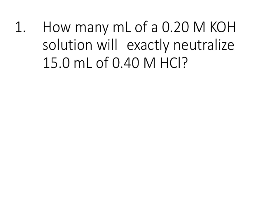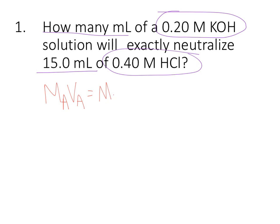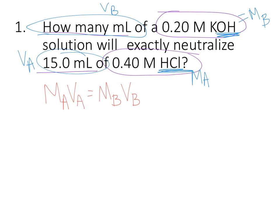Alright, all ready to get started. So number one on the worksheet says how many milliliters of a 0.20 M KOH solution will exactly neutralize 15 milliliters of a 0.40 M HCl solution. If you remember our formula is MAVA equals MBVB. What that stands for is the molarity of the acid times the volume of the acid equals the molarity of the base times the volume of the base. We need to look back at that problem and see what information we have. How many milliliters of a 0.20 M KOH? KOH, that's a base, so this is the molarity of the base. And it's asking for how many milliliters of that, so this is the volume of the base. Then we'll exactly neutralize 15 milliliters of a 0.40 M HCl. HCl, that's an acid, so this is molarity of the acid. 15 milliliters is the volume of the acid.